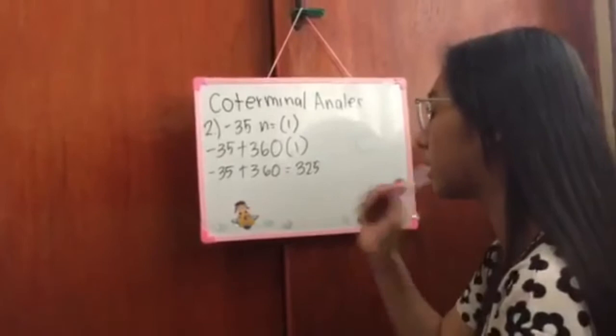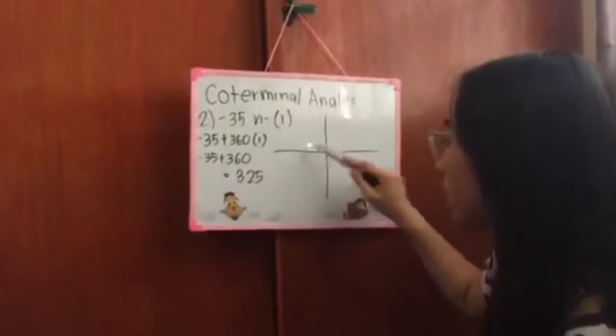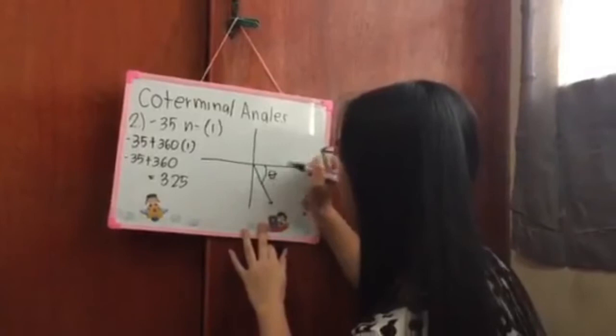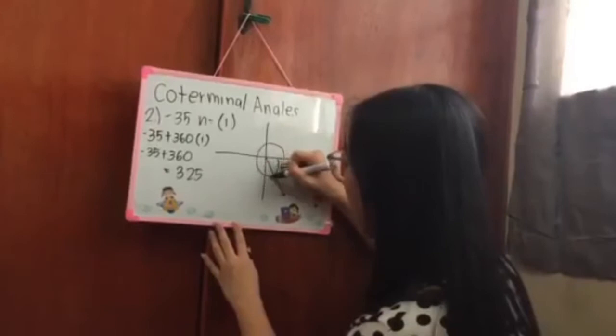Next we make the sketch. Number 1, we take the given negative 35. It's down here because it's negative, not here or here or here. It's only here because it didn't reach 90. This is the angle negative 35. Next we take the positive 325 answer. It's here now because it's positive. It only reaches here because it didn't reach 360.